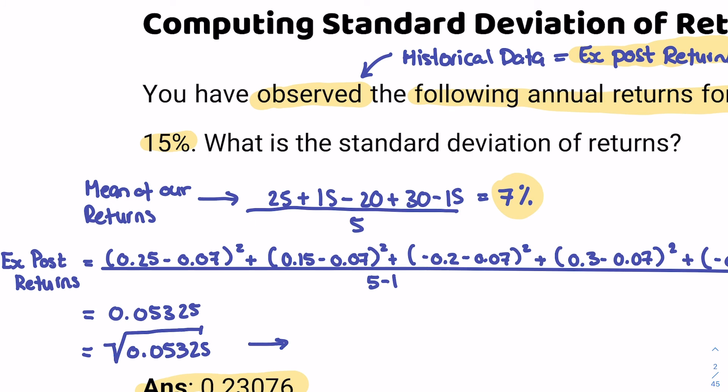This was a very simple question, but I wanted you to be able to identify the nuances you need to apply between ex-post returns and ex-ante returns. In this question, it was very straightforward. We were told you've observed data, and because you've observed data, you have to identify that we're dealing with ex-post returns, and then you just use the formula. Remember to do n-1 for your denominator, and then just remember to square root your data at the end to find the proper standard deviation of returns.